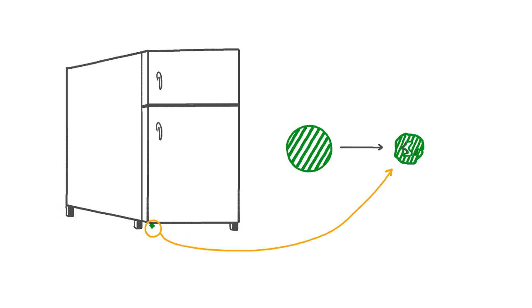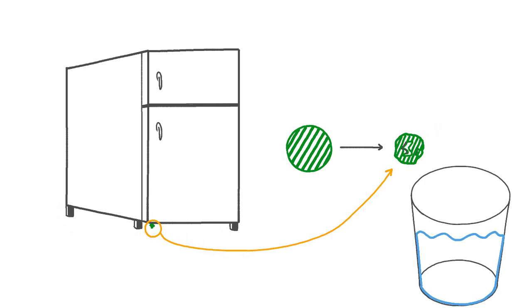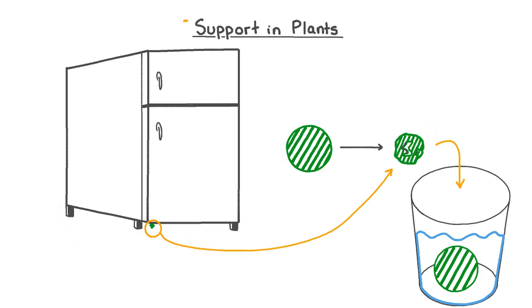Have you ever noticed that if a pea rolls under the kitchen fridge and you find it months later, it will have become wrinkled, shrunken and dry? If you tried putting this same pea into a glass of water it would swell back up to its original size pretty quickly, although eating it at this point would not be a good idea. This shrinking and swelling of the pea is due to its cells losing and gaining water, and it displays one typical example of a method of supporting plant cells.